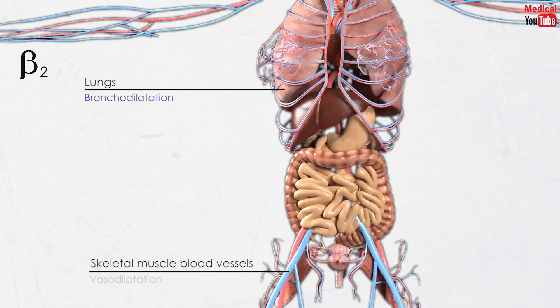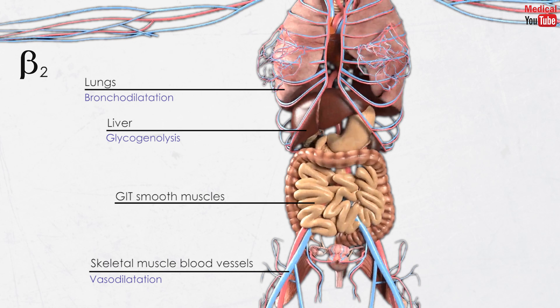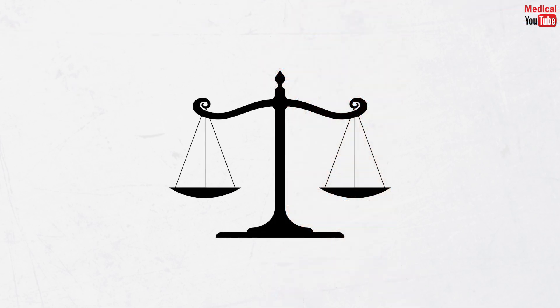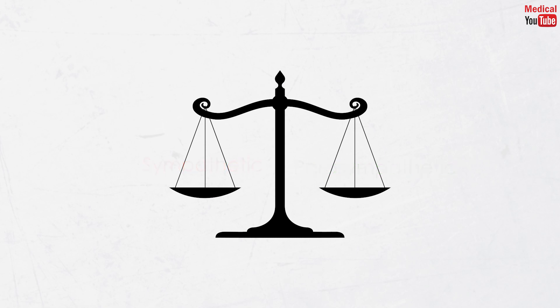Beta-2 is located in the lungs, responsible for bronchodilation, and in skeletal muscle blood vessels causing vasodilation. In the liver it causes glycogenolysis, increasing blood glucose. In GIT smooth muscles it decreases tone and motility. Beta-3 receptors are involved in lipolysis and also have effects on the detrusor muscle of the bladder.